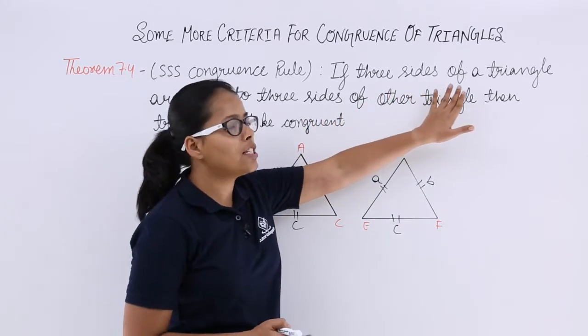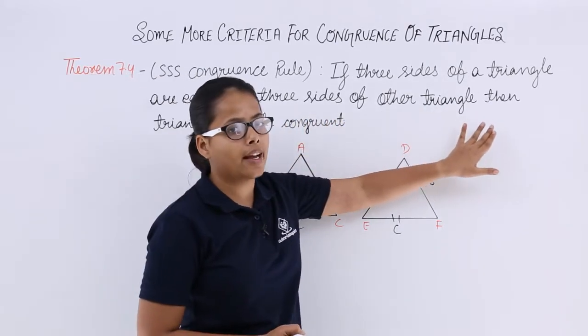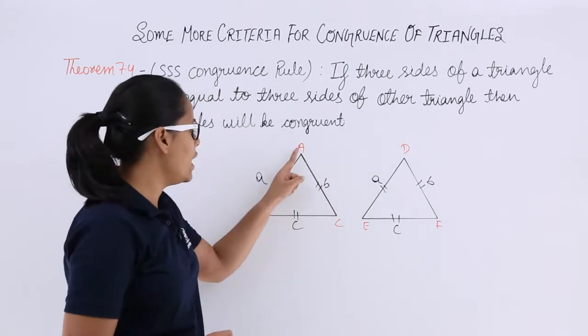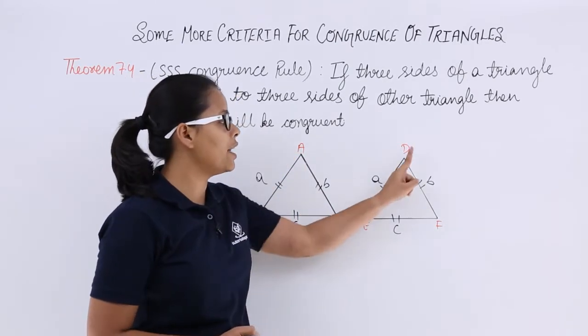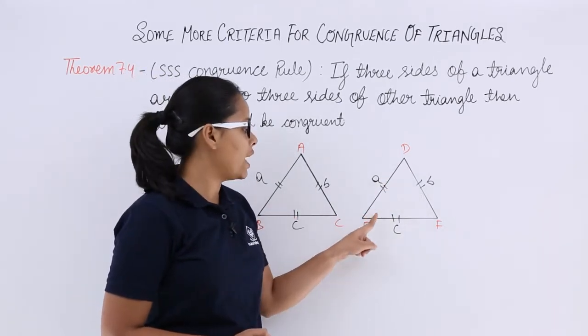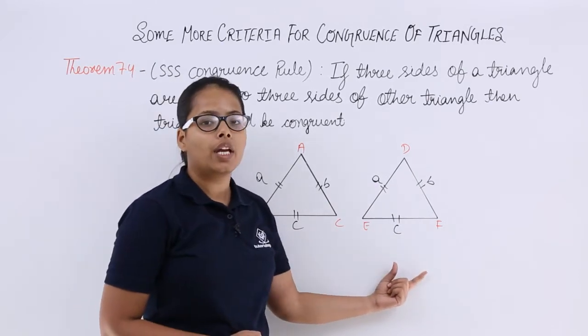If three sides of a triangle are equal to all the three sides of other triangle, then triangles will be congruent. You can see here in triangle ABC and in triangle DEF, side AB is equal to side DE, AC is equal to DF, and BC is equal to EF.